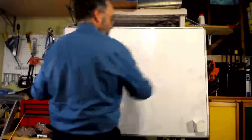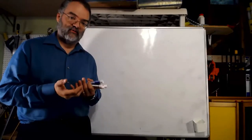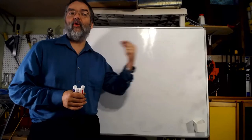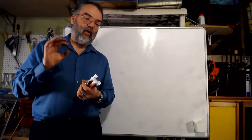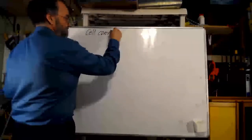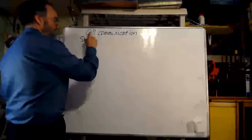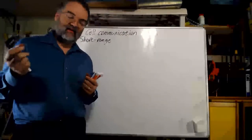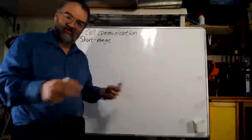Now that we know how cells respond to signals, let's talk about the kinds of signals cells might send to each other. Remember, you are not a single-celled organism — your body is composed of literally trillions of cells, and these cells have to be able to talk to each other to coordinate functioning over this large organism. Sometimes that means talking to cells right next to them; sometimes it means talking to cells all the way on the other side of the body. These are different communication methods.